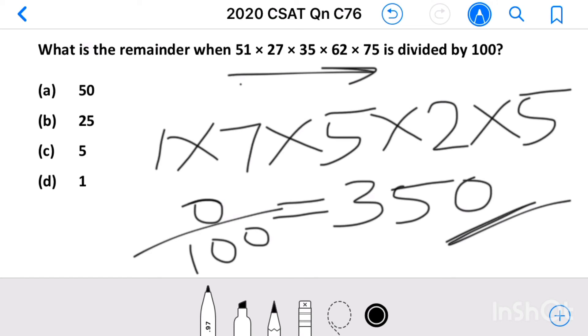So, in the given option, only option A has a 0 at the end. So, our answer is option A, 50.